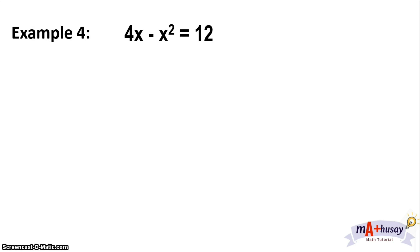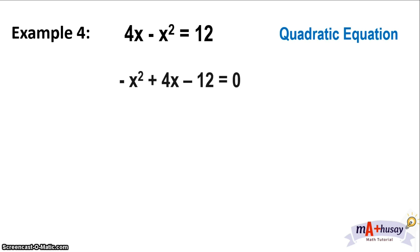Example number four: 4x minus x squared equals 12. This is a quadratic equation, but not written in standard form. The standard form should be ax squared plus bx plus c equals 0. So let's rewrite this in standard form by arranging the terms with exponents in descending order. We get negative x squared plus 4x minus 12 equals 0, since we added negative 12 to both sides of the equation.